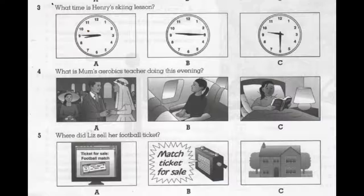4. What is Mum's aerobics teacher doing this evening? Why aren't you at your aerobics class this evening, Mum? Our teacher can't do the class this week. Is she ill again? No, she's fine now. She's flying to Paris tonight because she's got a wedding there tomorrow.